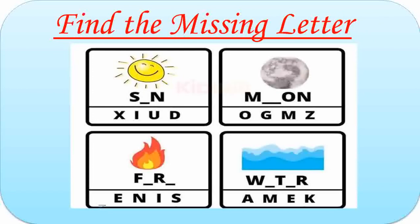Here are the names of some things. First one is Sun. Missing letter is U. S-U-N. Sun. Here missing letter is O. Moon. M-O-O-N. Moon. Third one is Fire. Missing letters are I and E. The word becomes F-I-R-E. Fire. Fourth one is Water. Missing letters are A and E. W-A-T-E-R. Water.